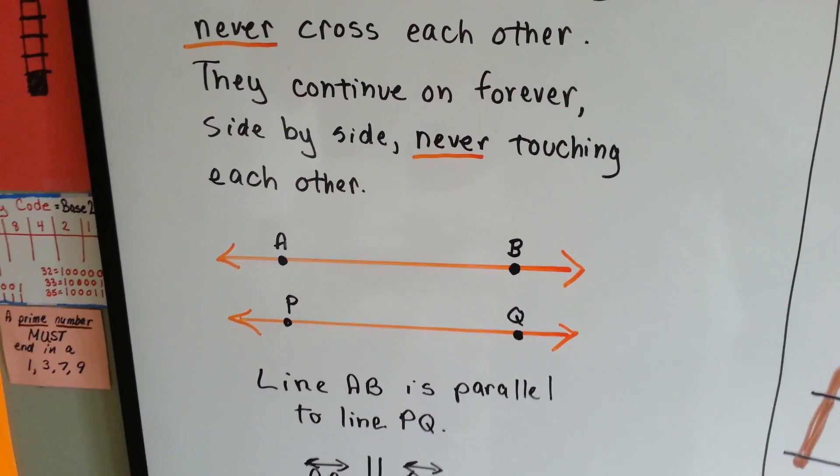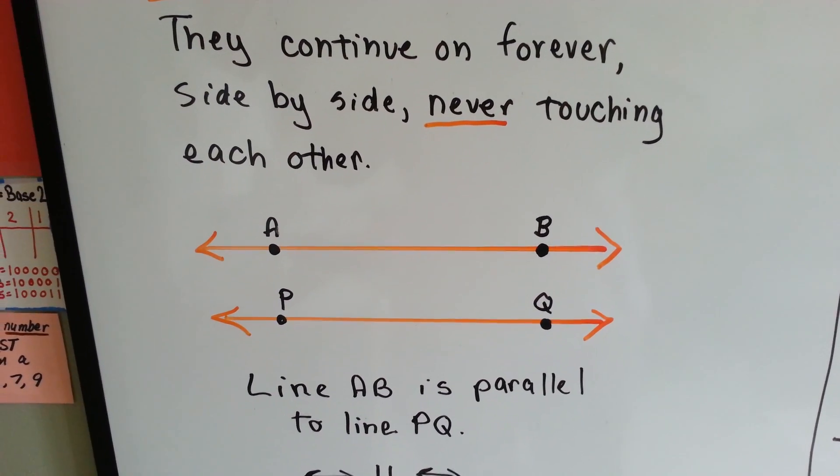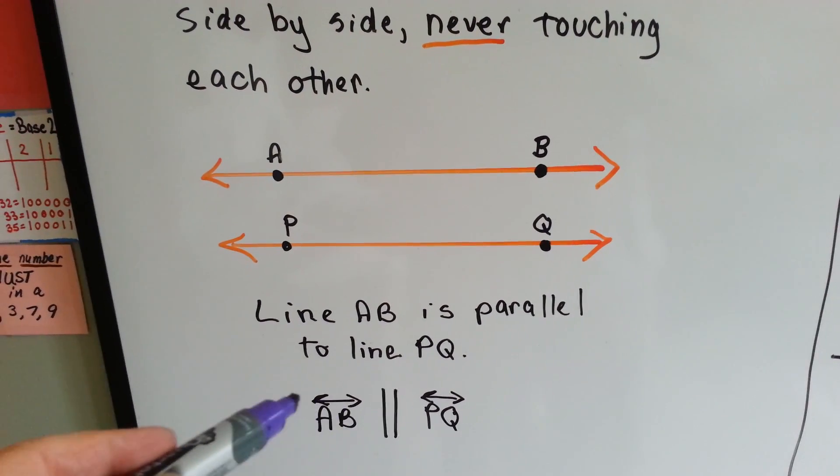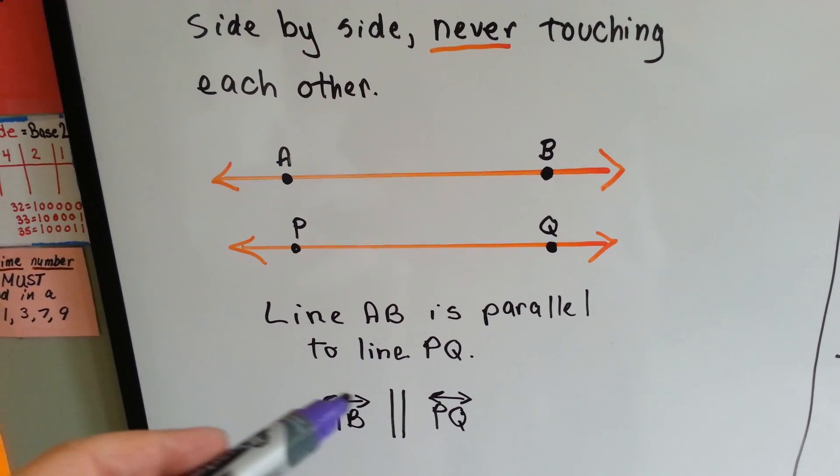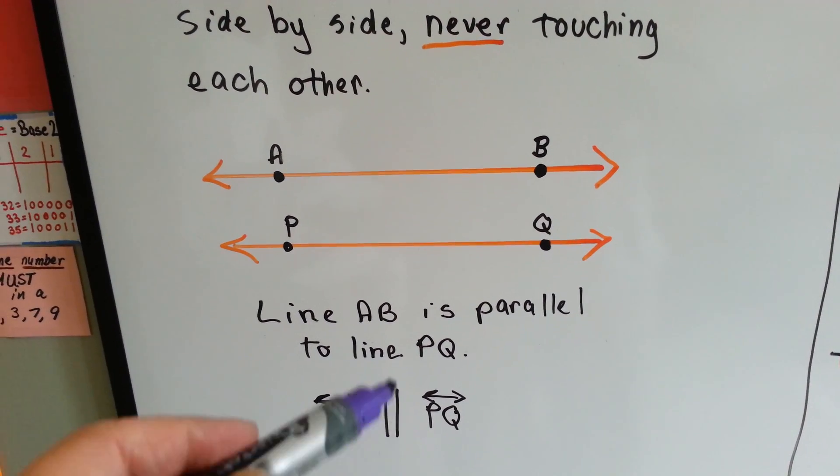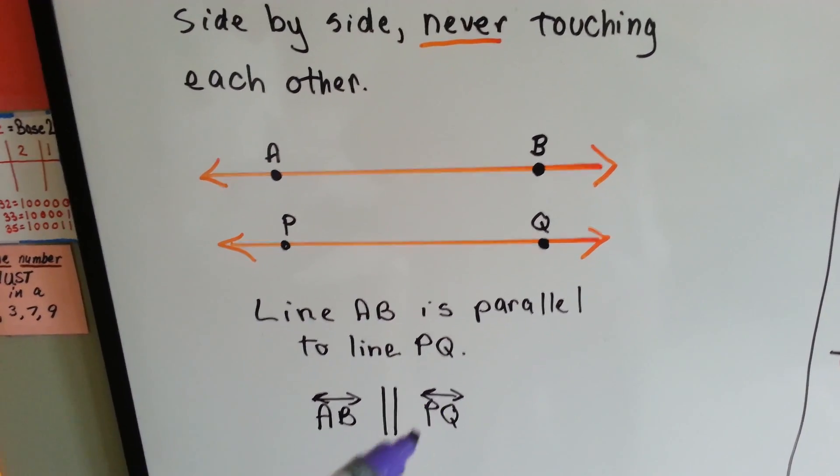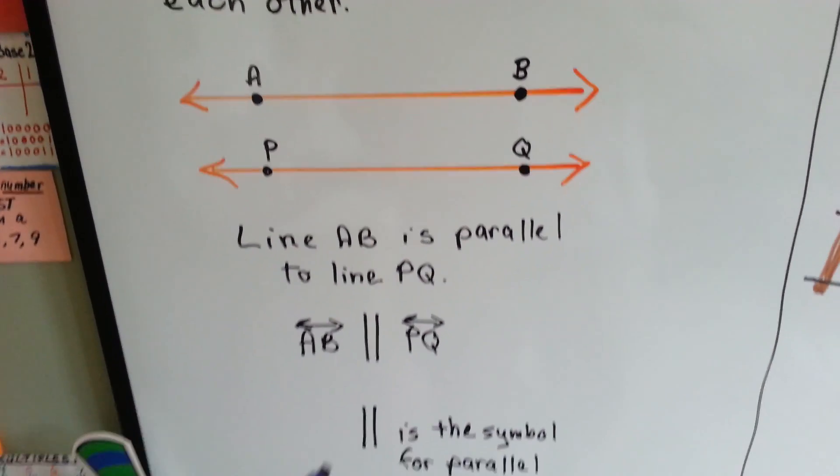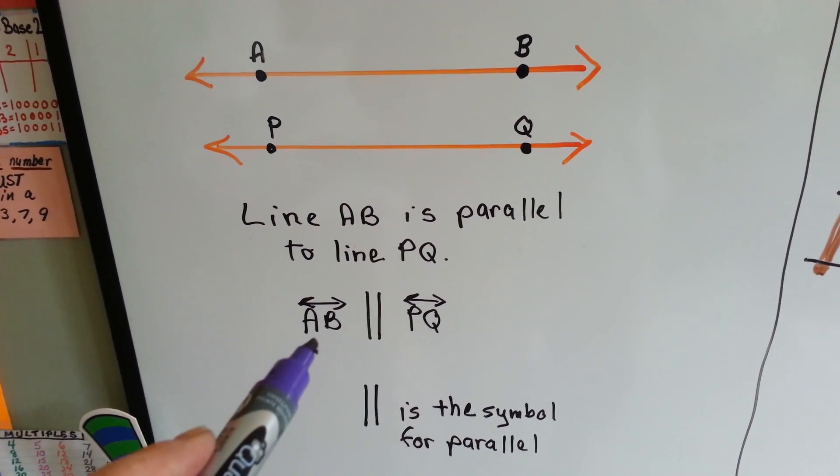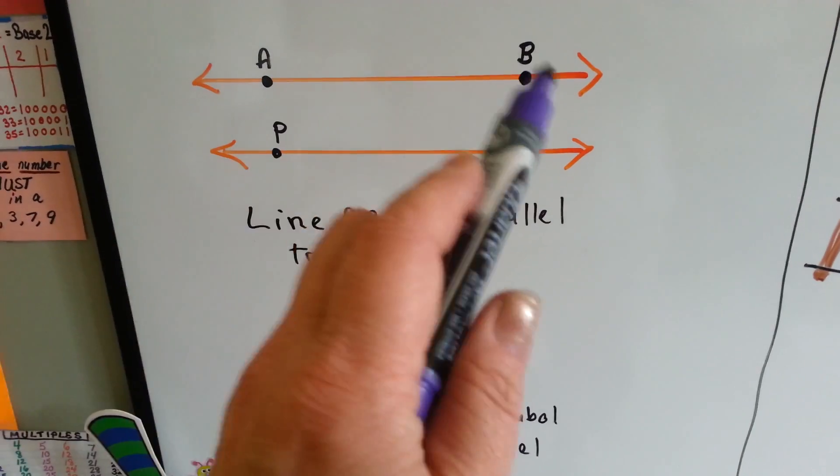Line AB is parallel to line PQ. See? They're side by side, they continue on in either direction, but they don't cross each other. It would be written as AB with our line symbols with the two arrows on each side over them for line. These two lines going straight up and down like that for parallel, and then PQ would be written as line PQ with the little line with the two arrows over the top. This symbol is the symbol for parallel. So you'd say line AB is parallel to line PQ. They're parallel to each other.